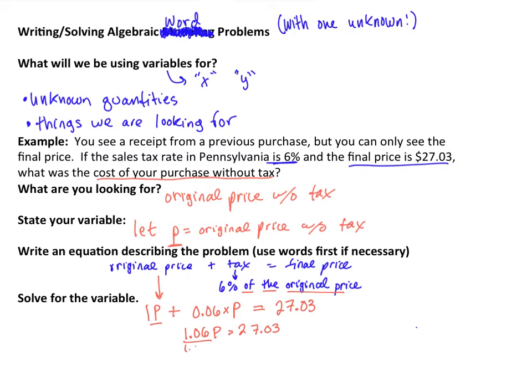And now if I can divide by this value of 1.06, I can find my value of P. So if I take 27.03 and I divide that by 1.06, I'm going to get the value of P in this situation is 25.5, which I know this is a figure in dollars. This is $25.50.